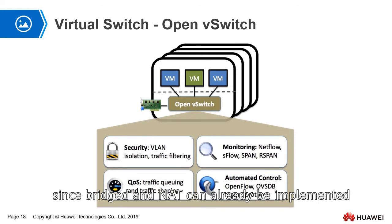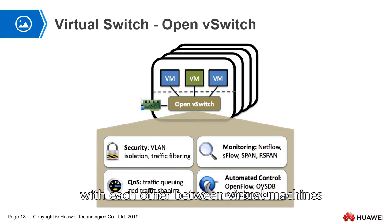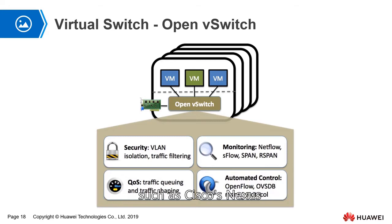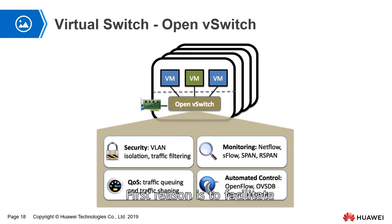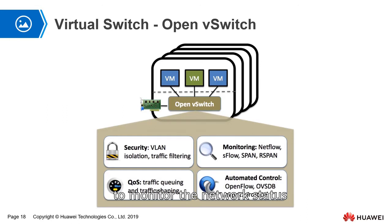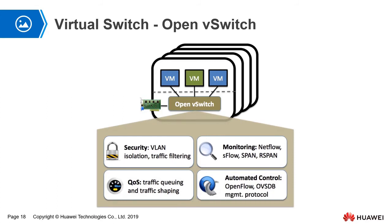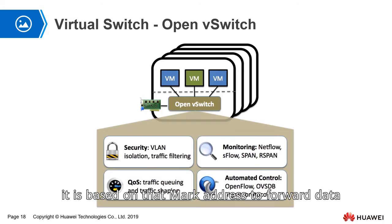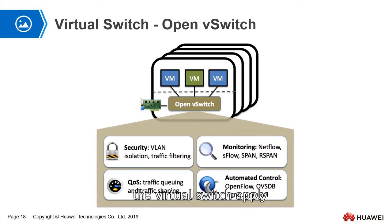Since bridge and NAT can already implement communication between virtual machines, why do many vendors make their own virtual switches, such as Cisco's Nexus 1000V, Open vSwitch, and Huawei's DVS? The first reason is to facilitate management and monitoring — using a monitoring virtual switch makes it convenient for administrators to monitor network status and data traffic in the entire cloud environment. The second reason is it speeds up packet forwarding and addressing. Compared to bridge, which forwards data based on MAC address, the virtual switch applies a caching mechanism to speed up the forwarding of data packets.